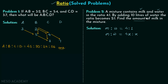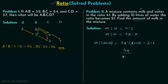After adding 10 liters of water, the ratio becomes milk:(water + 10) = 4x:(x + 10). As per the problem, the new ratio is 2:1, so we write 4x/(x + 10) = 2/1. Cross-multiplying gives 4x × 1 = 2 × (x + 10), which simplifies to 4x = 2x + 20.